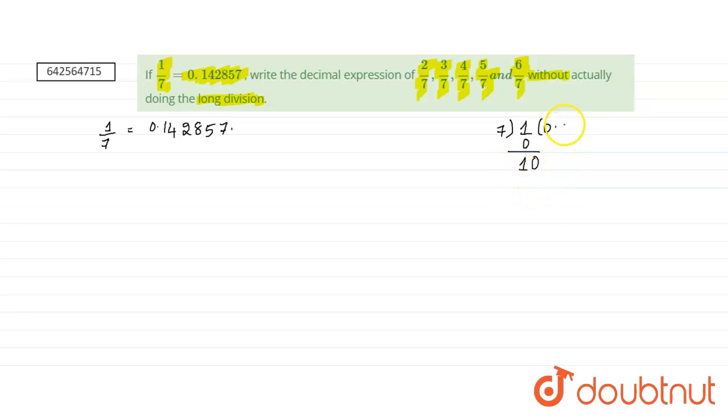So, we get 7 ones are 7, then 3, 0, 7 fours are 28, then 2, 0, 7 twos are 14, then we have 6, 0.